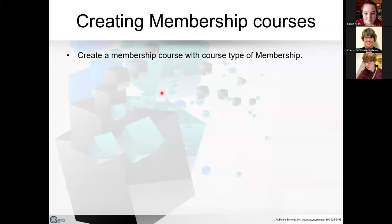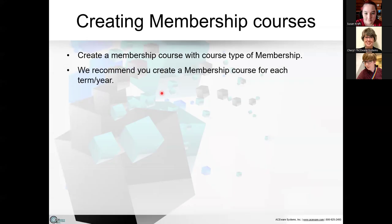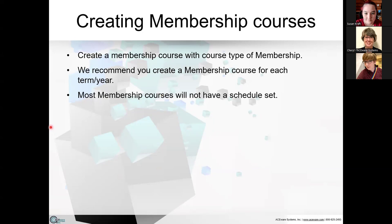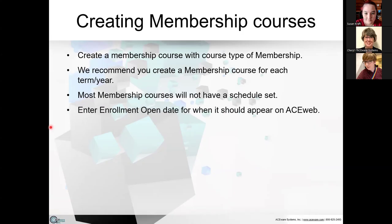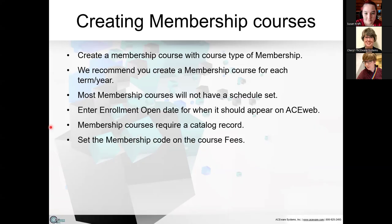You create a membership course with the course type of Membership. We usually recommend that you set one up for each term or year — if you're doing a different membership for each spring and fall, set up a membership course for both. Most membership courses do not have a schedule set, so you enter an enrollment open date for when it should start appearing on AceWeb. Membership courses require a catalog record, so be sure to set one up. Then set your membership code on the course fees you add to the membership course. For each fee, you also set up either a membership expiration date or a number of days.